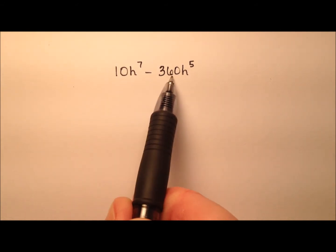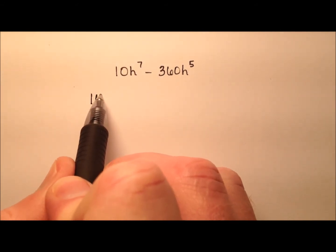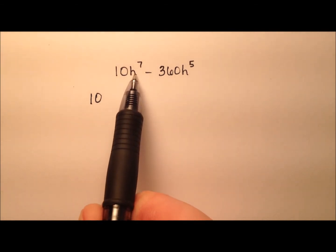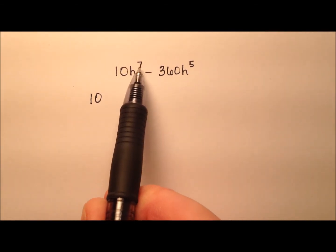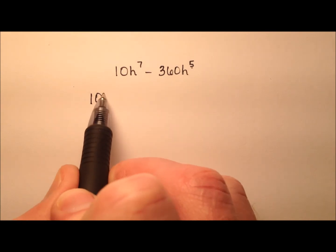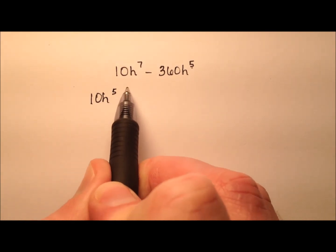It looks like between 10 and 360, I can factor a 10 out. And since both terms have an h, one is to the power of 7 and one is to the power of 5, I can take an h^5 out.